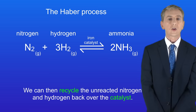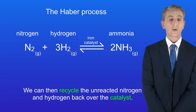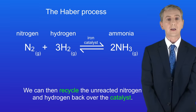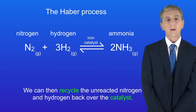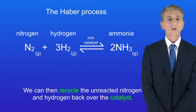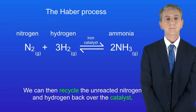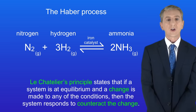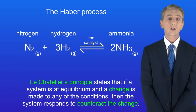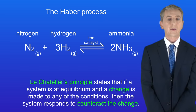If you're a higher tier student you need to be able to explain how the conditions for the Haber process are chosen to increase the yield. This involves Le Chatelier's principle, which we saw in the topic on rates of reaction — I would strongly recommend watching those videos again before continuing. Le Chatelier's principle states that if a system is at equilibrium and a change is made to any of the conditions, then the system responds to counteract the change.